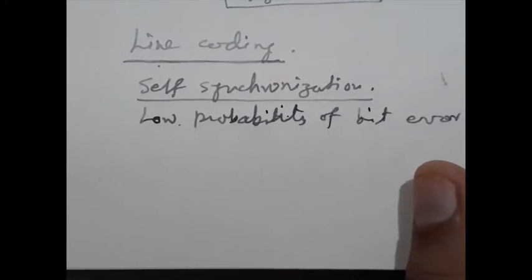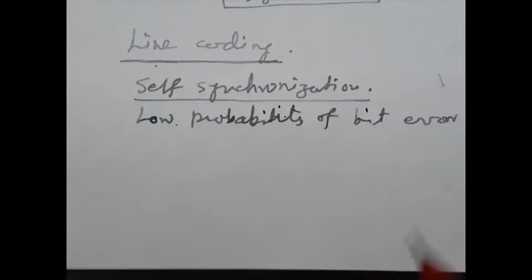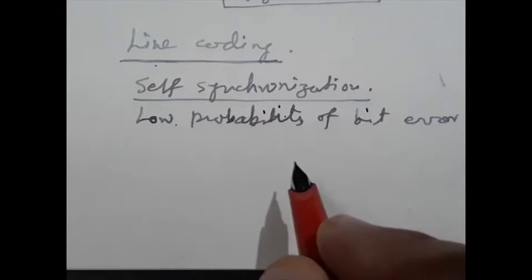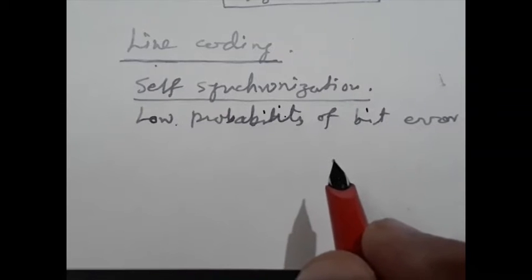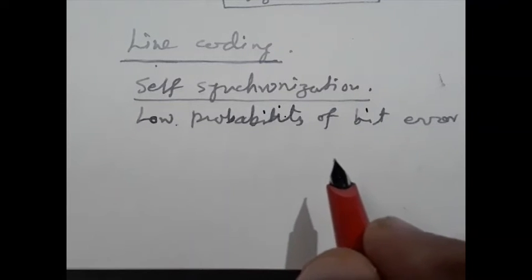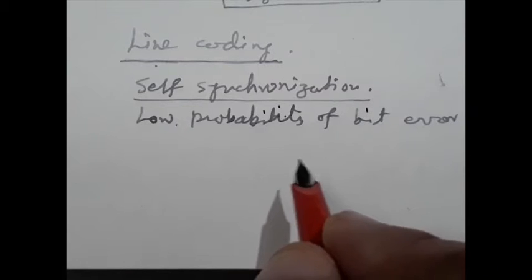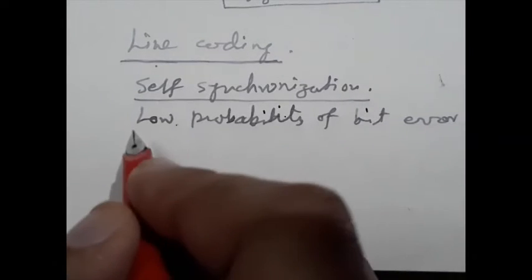Next is low probability of bit error. When the input data signal is corrupted by noise or ISI (inter-symbol interference, which we will discuss later on), the probability of bit error should be low.